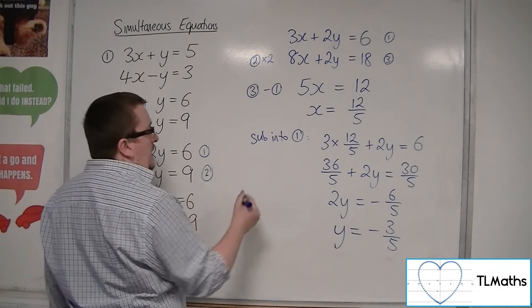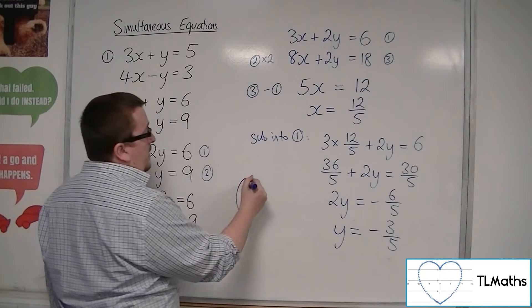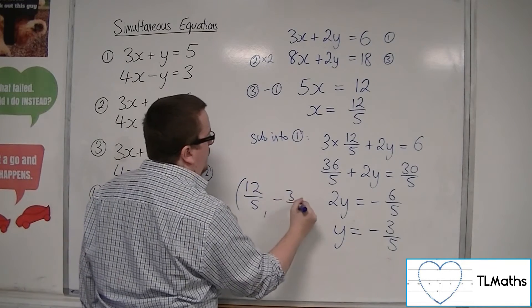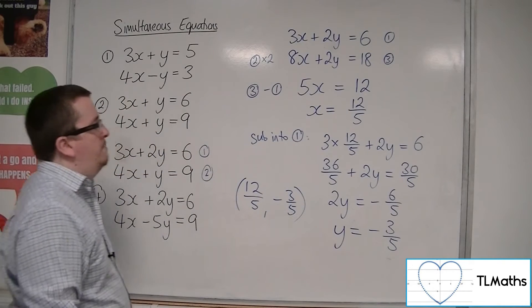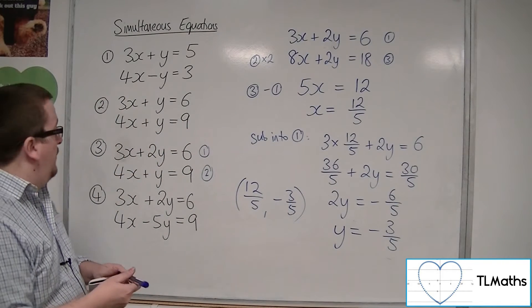So that means that these two lines intersect at 12 fifths and minus 3 fifths. So that's number 3.